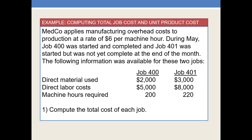Medco applies manufacturing overhead costs to production at a rate of $6 per machine hour. During May, Job 400 was started and completed, and Job 401 was started but was not yet complete at the end of the month. Direct material used is $2,000 and $3,000 for the two jobs, direct labor cost is $5,000 and $8,000, and 200 machine hours were required for Job 400 and 220 hours for Job 401.